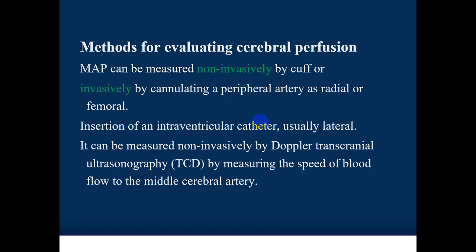Methods for evaluating cerebral perfusion include invasive and non-invasive approaches. MAP can be measured non-invasively by cuff or invasively by cannulating a peripheral artery such as the radial or femoral artery. ICP is measured invasively via an intraventricular catheter placed in the lateral ventricle, or non-invasively by transcranial Doppler ultrasonography (TCD), which measures blood flow velocity in the middle cerebral artery.